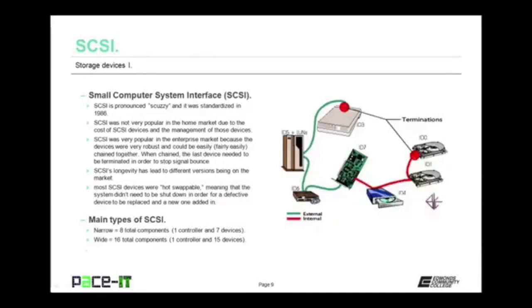In order for the SCSI chain to work, the last device needed to be properly terminated. SCSI's longevity has led to different versions being on the market at the same time. Many SCSI devices were hot swappable, meaning the system didn't need to be shut down for a defective device to be replaced or for a new device to be added. There are two main iterations of SCSI: NarrowSCSI, where eight total components could be chained together — one controller and seven devices — and WideSCSI, where 16 total components could be chained together — one controller and 15 devices.